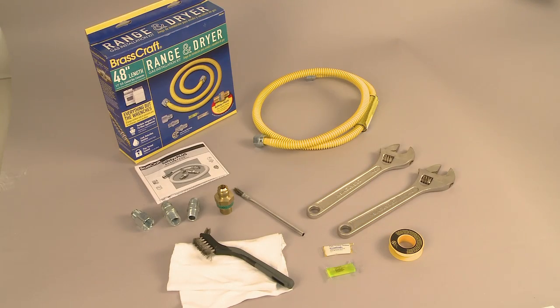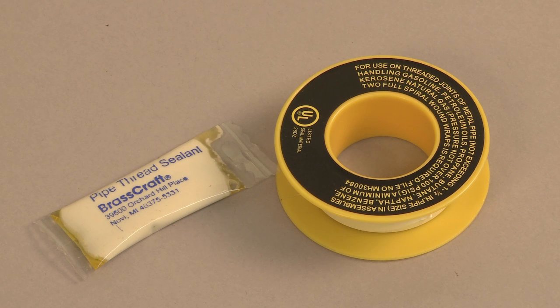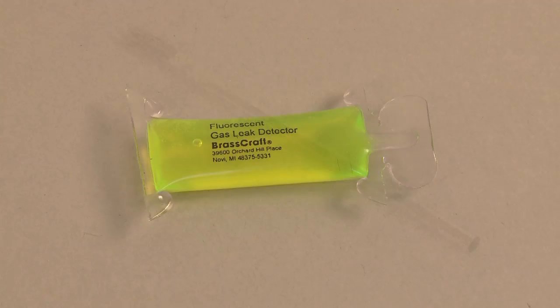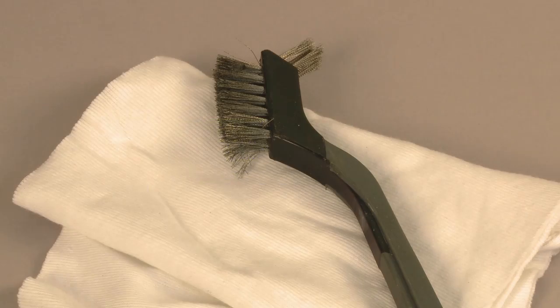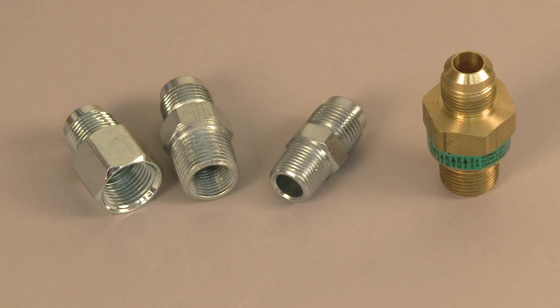Tools and supplies needed for the job are two adjustable wrenches, pipe thread sealant or yellow gas tape, small brush to apply thread sealant, leak detection solution, wire brush, rag, and a gas appliance connector with the appropriate gas safety valve.